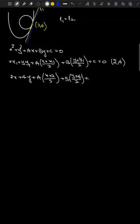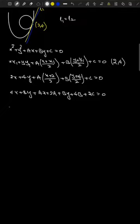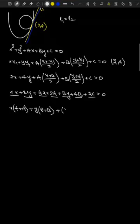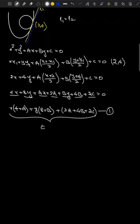Taking 2 as LCM and multiplying through: (4 + a)x + (8 + b)y + 2a + 4b + 2c = 0. Let me take this as L1 — this is the equation of the tangent for the circle at (2, 4).